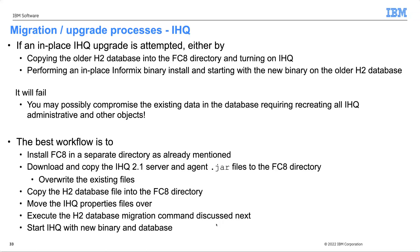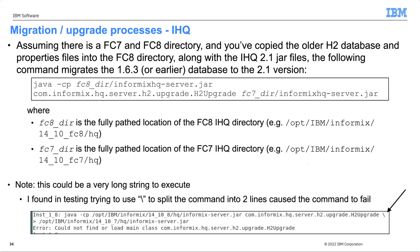The workflow: install FC8 in a separate directory. Download IHQ 2.1 server and agent JAR files into the FC8 directory, overwriting existing JAR files. Copy the H2 database file from FC7 (or earlier) into FC8. Move the IHQ property files — server and agent — over to FC8. Then execute the H2 database migration command.